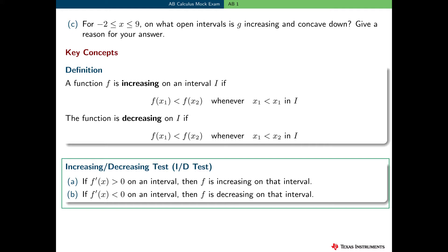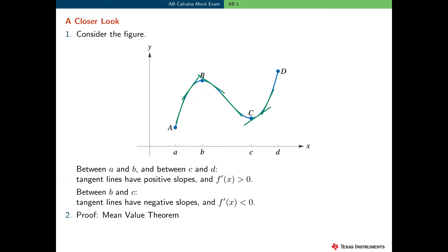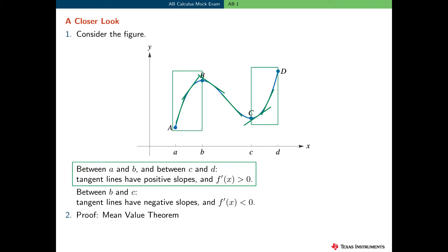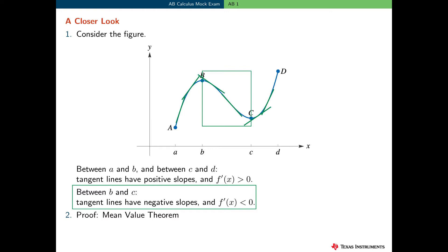If f prime of x is greater than 0 on an interval, then f is increasing on that interval. And if f prime of x is less than 0 on an interval, then f is decreasing on that interval. Here's a closer look at this increasing-decreasing test, and some justification for this result. Consider the graph of the function f. Between the values x equals a and x equals b, and x equals c and x equals d, the tangent lines to the graph of f have positive slopes. Therefore, f prime of x is greater than 0. Similarly, between the values x equals b and x equals c, the tangent lines to the graph of f have negative slopes. Therefore, f prime of x is less than 0. So the increasing-decreasing test makes sense, and we can visualize this graphically.